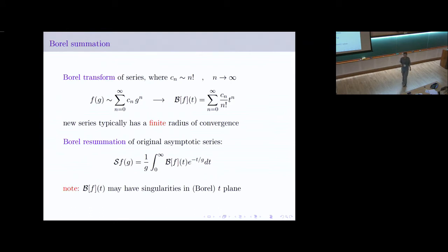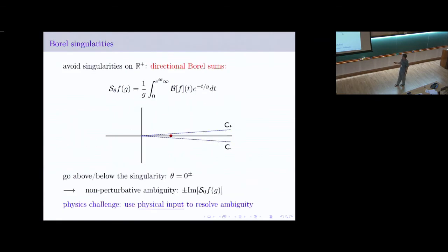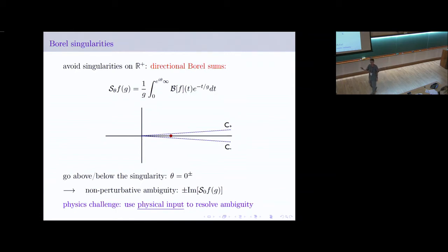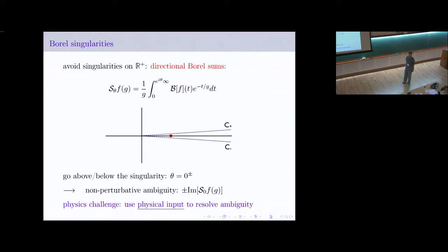The Borel transform function can have singularities — poles, branch cuts, multiple sheets. If you have a singular point that's a pole or branch cut, you can deform your contour to go just above it. The difference between going above and below a pole is just the residue contribution, which is some exponentially small non-perturbative term. If it's a branch point with a cut, the integral around the cut gives a non-perturbative term multiplied by another perturbative series. And the interesting statement is that new perturbative series is related to the original one.